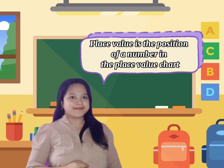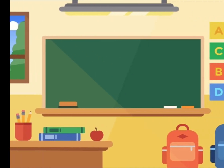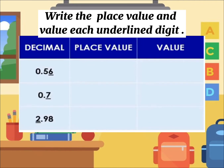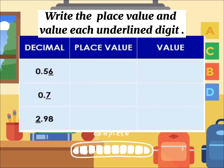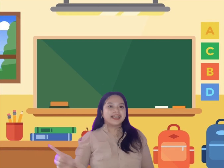Remember that we are looking for place value, which is the position of the number in a place value chart. For our next activity, you have to write the place value and value of each underlined digit. You only have one minute to answer. Time's up — now let's check the place value and value of each underlined digit. Did you come up with the same answers?